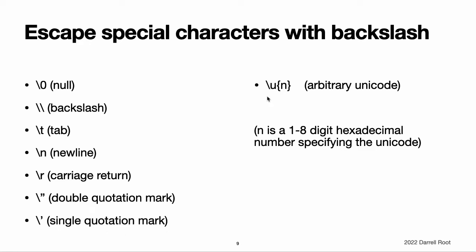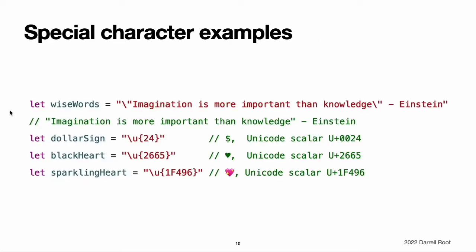Special characters in string literals. An arbitrary Unicode scalar value, written as backslash U and then N inside curly braces, where N is a 1 to 8 digit hexadecimal number. Unicode is discussed in the Unicode section below. The code shows four examples of these special characters. The wiseWords constant contains two escaped double quotation marks. The dollarSign, blackHeart, and sparklingHeart constants demonstrate the Unicode scalar format.